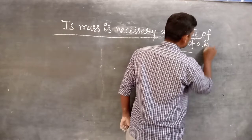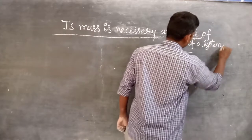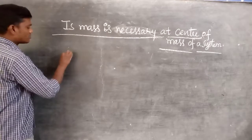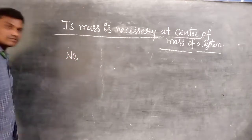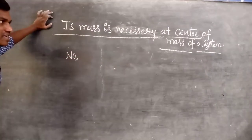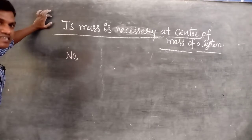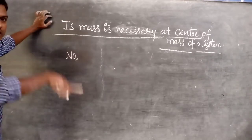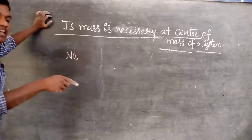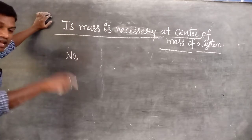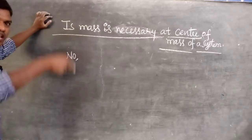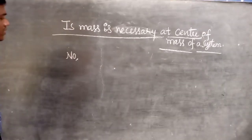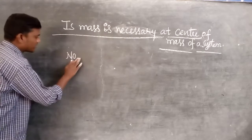So our answer is: no. At the center of mass of a system, in certain cases mass is present, and in certain cases mass is not present. But if mass is not present at the center, the center of gravity is still located at that point only.